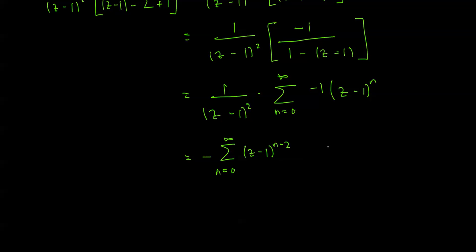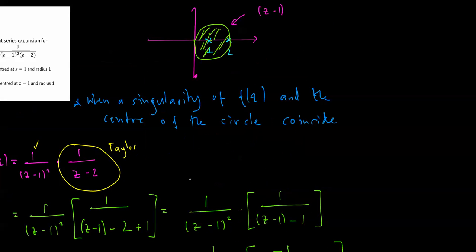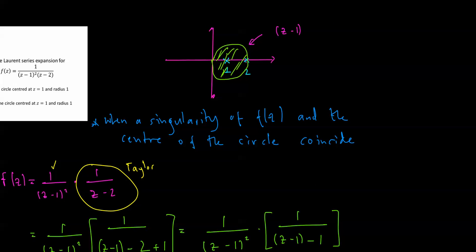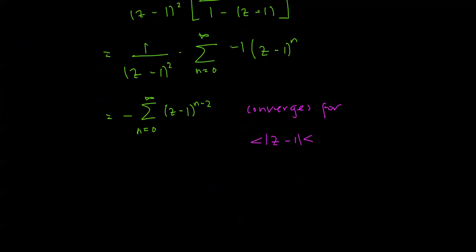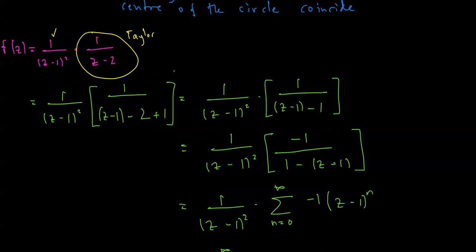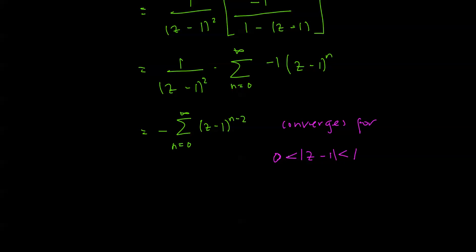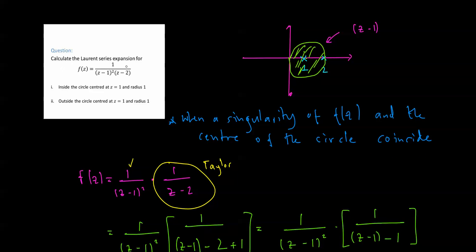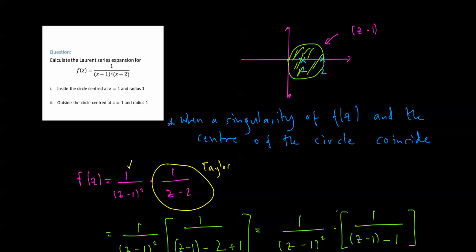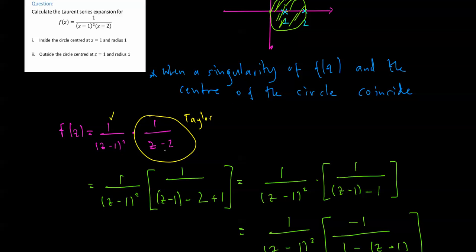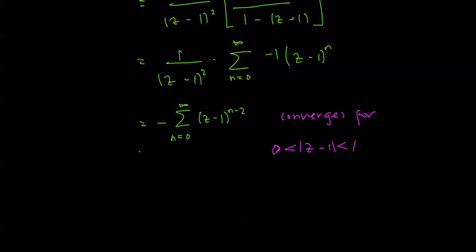Cleaning it up and bringing it all together: negative, sum from n equals 0 to infinity, z minus 1 to the n divided by (z minus 1) squared, so that becomes z minus 1 to the n minus 2. And where is this convergent? This converges for mod(z minus 1) less than 1, because that's the distance the nearest singularity is from the center. The distance of the singularity at z equal 1 from the center is 0. So this converges for mod(z minus 1) less than 1 — which is inside the circle — but it does not include the center. And that's the answer to the question for part 1: take out the 1 on (z minus 1) squared, find the Taylor series for the other term, and that's your final answer.